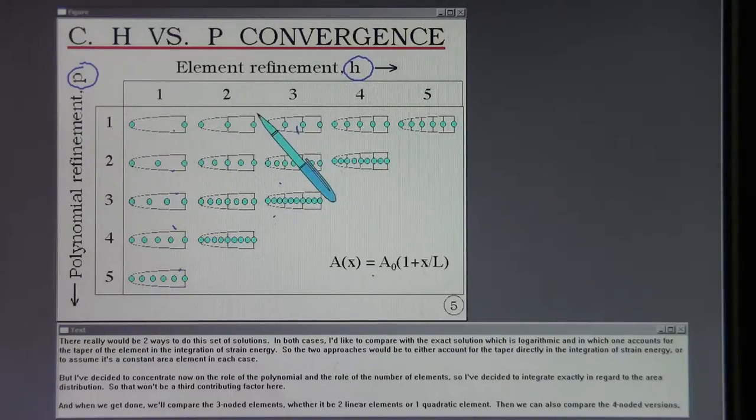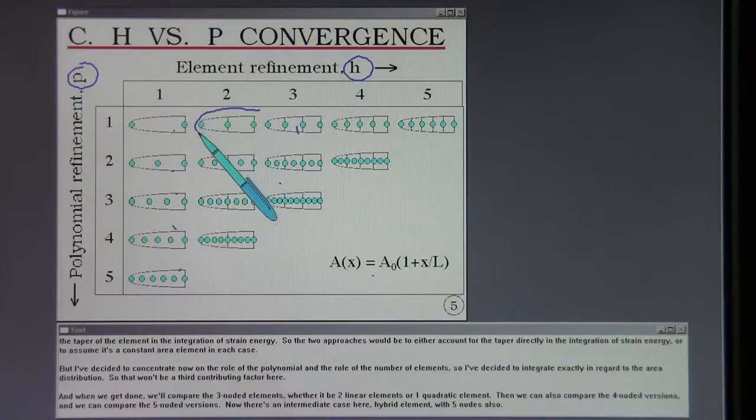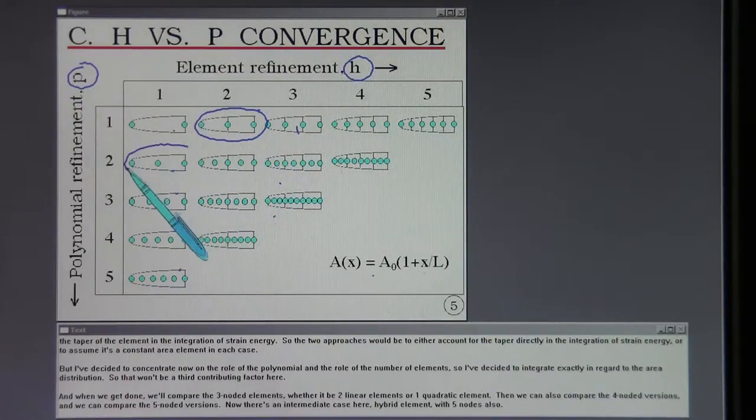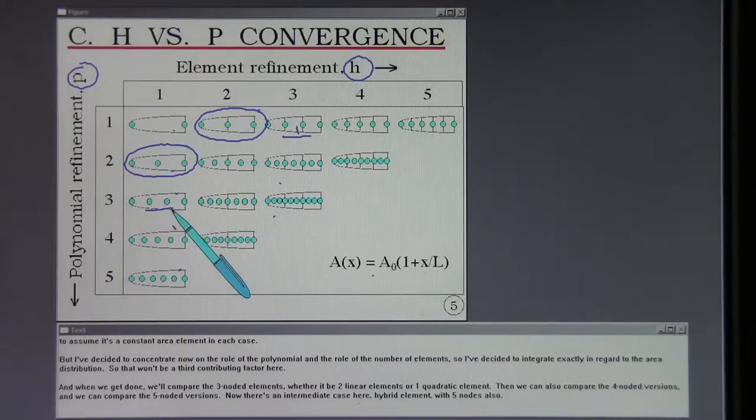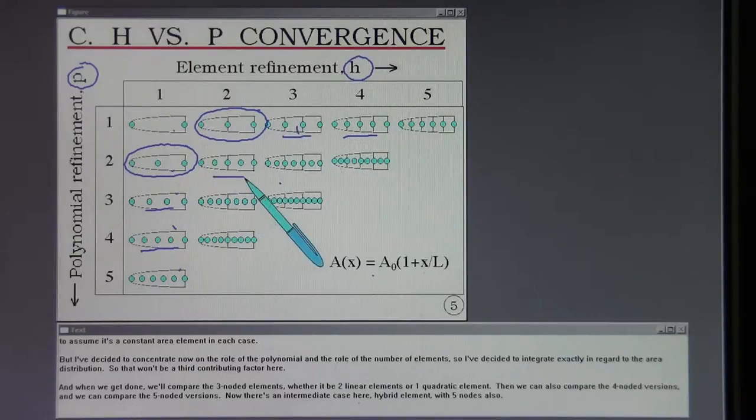There really would be two ways to do this set of solutions. In both cases, I'd like to compare with the exact solution, which is logarithmic, and in which one accounts for the taper of the element in the integration of strain energy. So the two approaches would be to either account for the taper directly in the integration of strain energy, or to assume it's a constant area element in each case. But I've decided to concentrate now on the role of the polynomial and the role of the number of elements. So I've decided to integrate exactly in regard to the area distribution, so that won't be a third contributing factor here. And when we get done, we'll compare the three-noded elements, whether it be two linear elements or one quadratic element. Then we can also compare the four-noded versions, and we can compare the five-noded versions. Now there's an intermediate case here, a hybrid element with five nodes also.